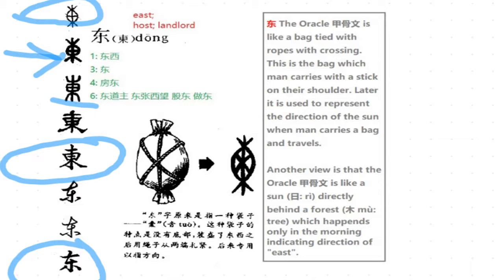You can see 东 has two explanations. The first one is that the oracle bone script of 东 looks like a bag — you can see a bag tied with ropes, and the rope has some cross shape. This means a bag full of stuff is tied and going to be carried by a man with a stick on his shoulder.